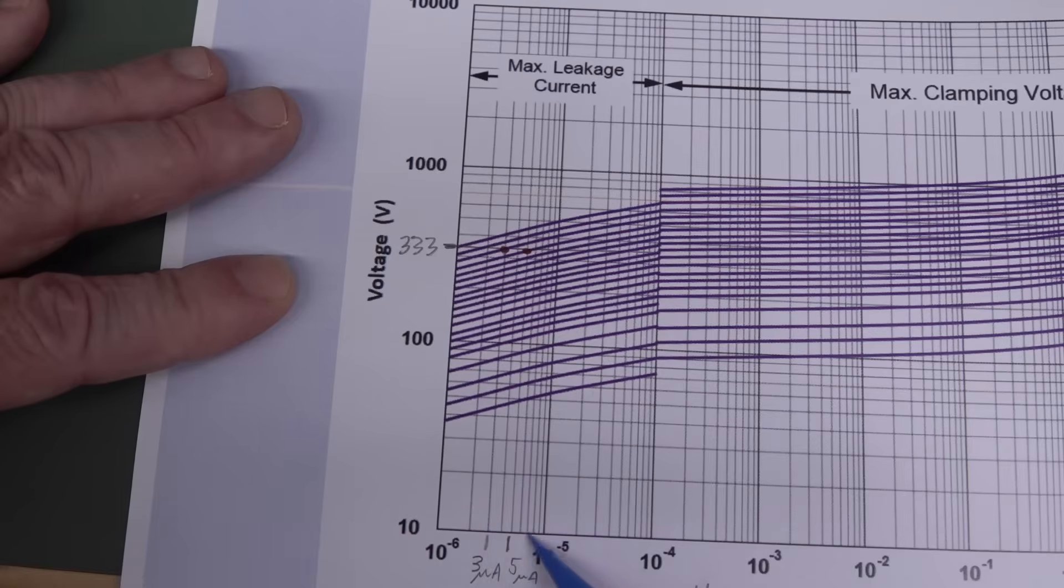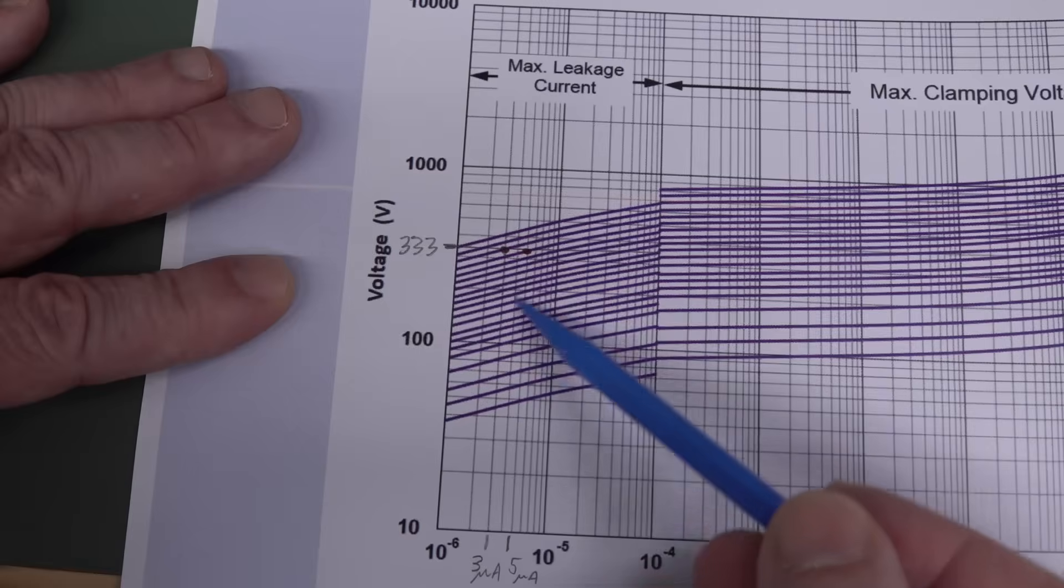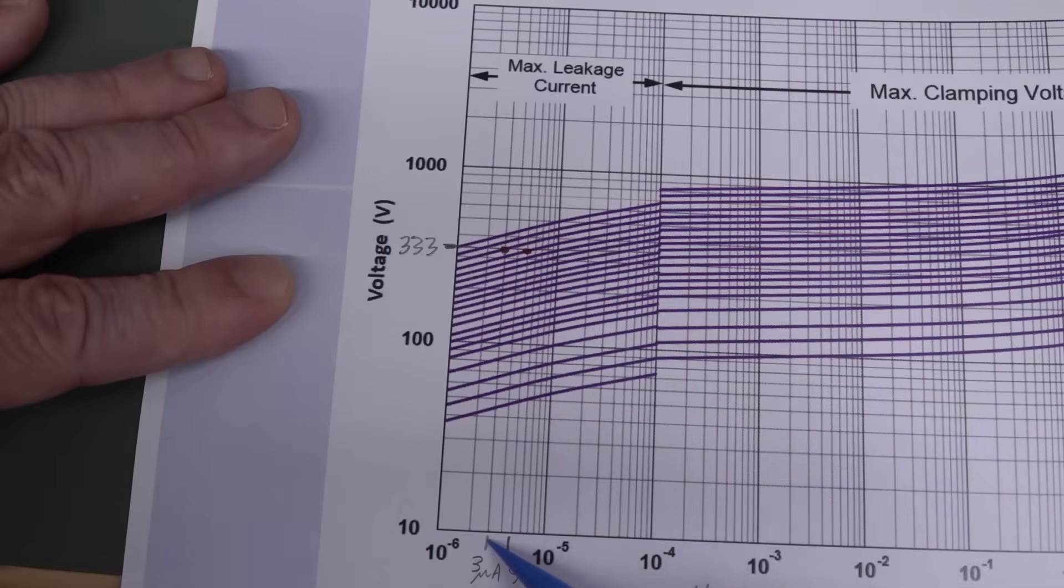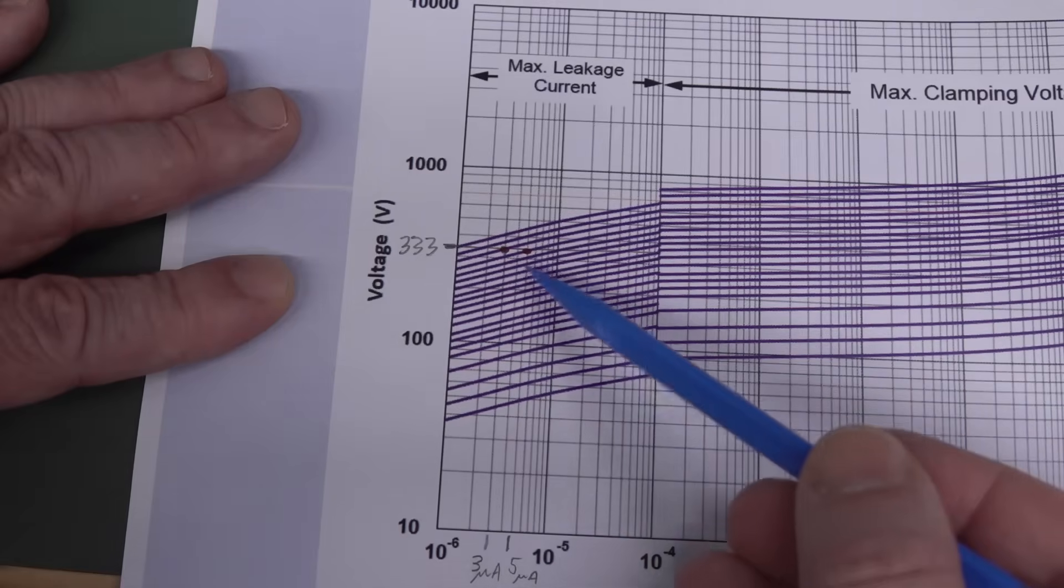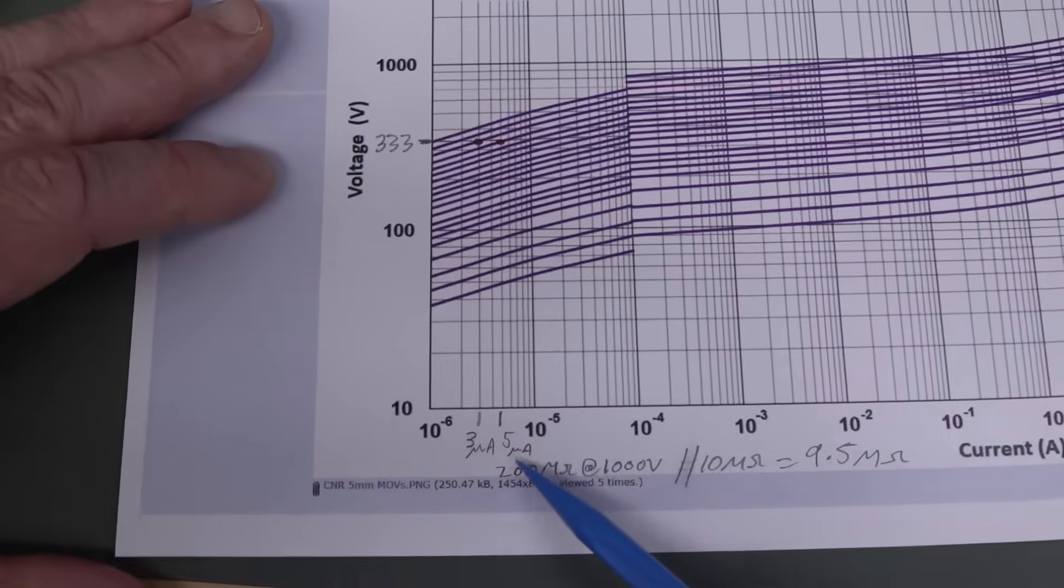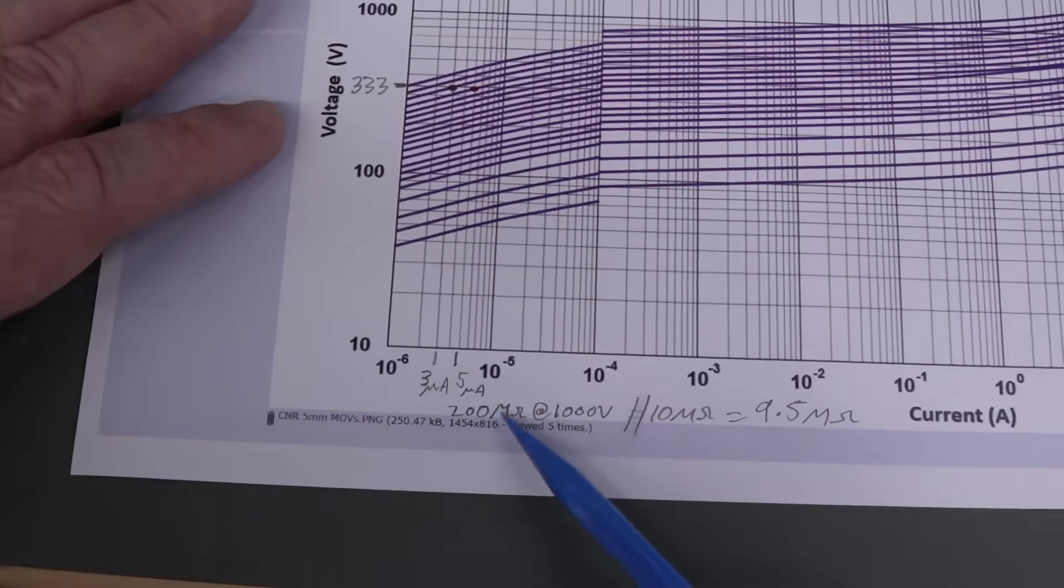So it splits off down here as well. So third and fourth. So I've put in 333 volts. So I've put a line across there and then where it intersects with the particular characteristic curve for that MOV, then we drop that down and we're down here at 10 to the minus 6. That's 1 microamp there. So 1, 2, 3, 4, 5, 6, 7, 8, 9. And this is 10 microamps here. So 1 microamp here. This one where it intersects, that red dot there is 3 microamps and that one is 5 microamps.